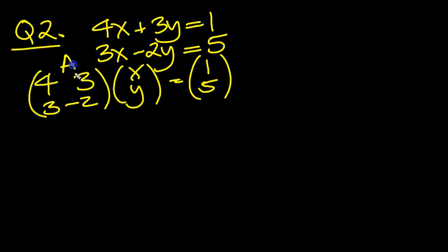So label this matrix as A then. And then we can work out det A. So det A here will be minus 8 take away 9 is minus 17.